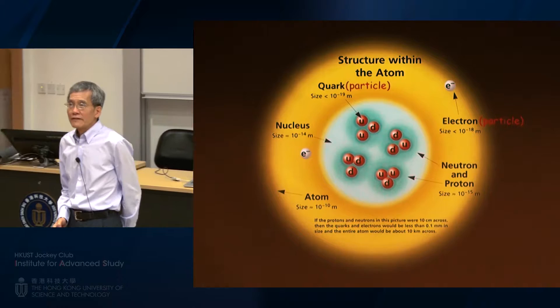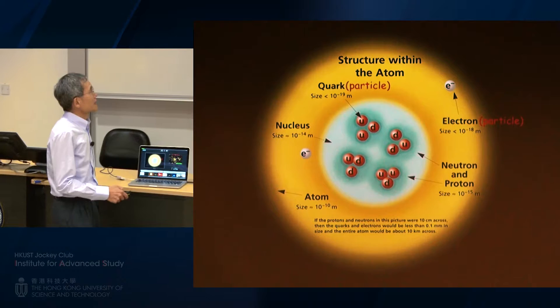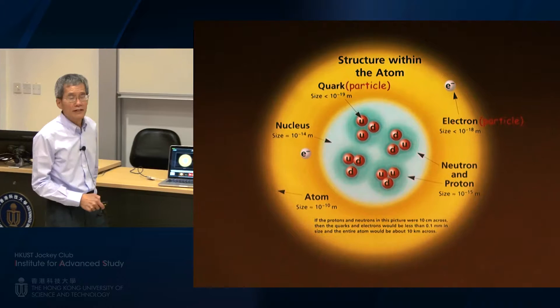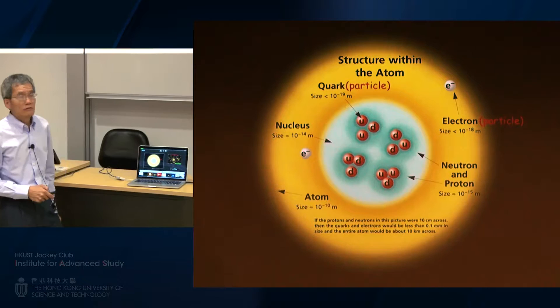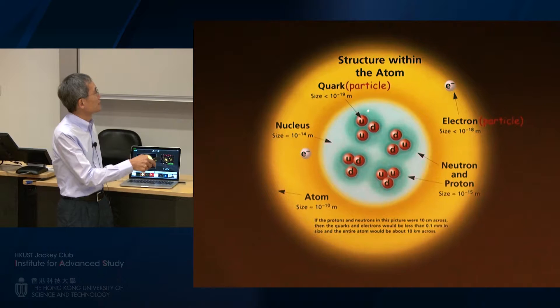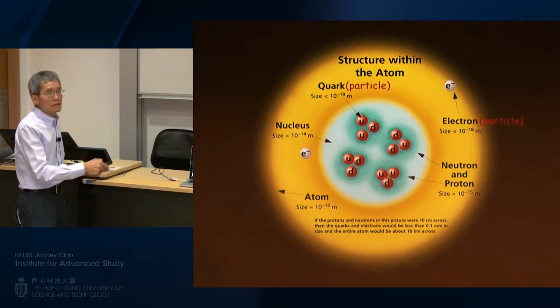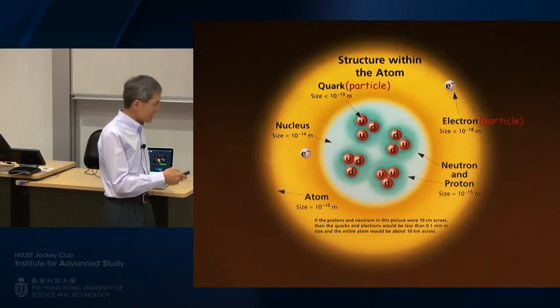Many of you know that matter is made up of atoms. However, in particle physics, we do not consider atoms as elementary particles. Nowadays, we know the atom is made of a cloud of electrons enclosing a nucleus. If we look at the nucleus more carefully, we have protons and neutrons. Through a series of studies, we now know that protons and neutrons are also composite — they are made up of quarks. For instance, a proton is made of two up quarks and a down quark. From experiments, we know that quarks, along with the electrons we are familiar with, are not divisible anymore. These are considered the fundamental building blocks of matter in particle physics.